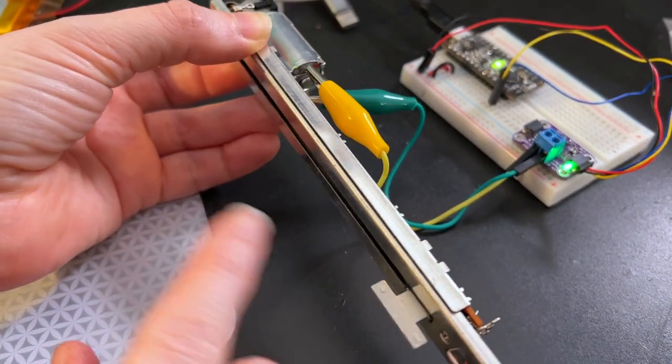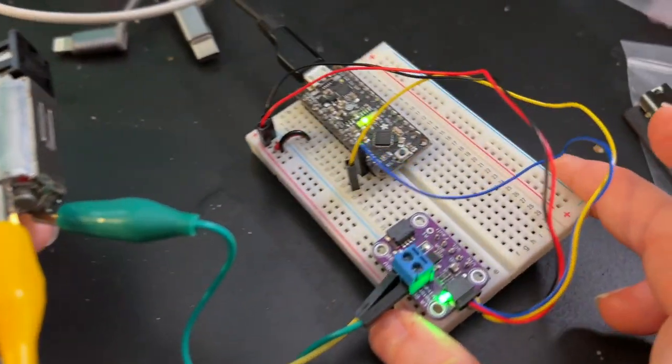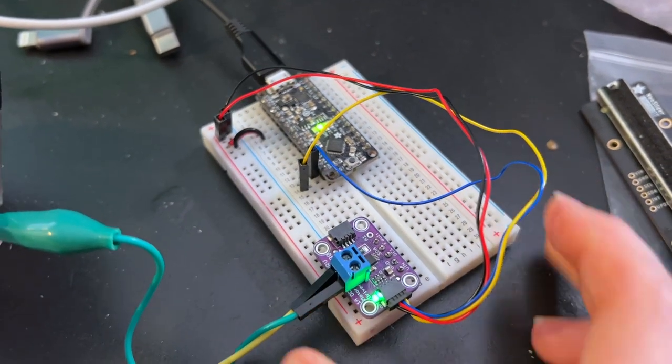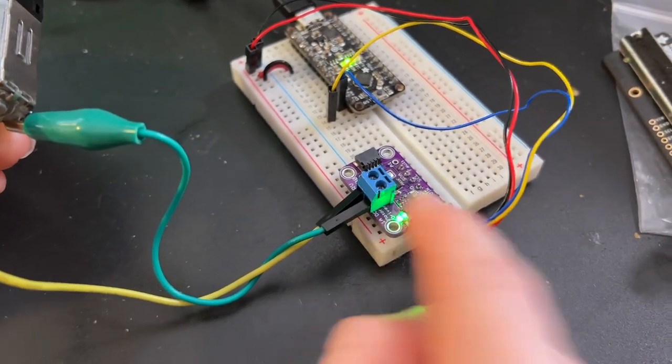So you can either set the resistance manually or have it automatically set to a pre-setting. I'm controlling it with this breakout board that I designed right before COVID but never finished - a DRV 8833 STEMIQT breakout.